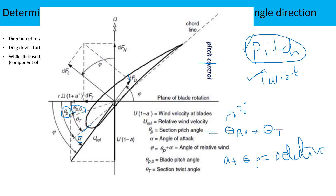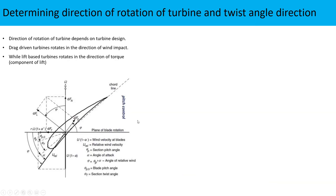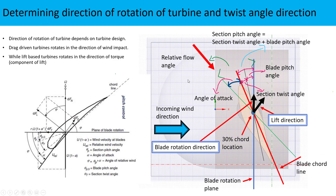When you add the angle of attack alpha to the section pitch angle theta_P, you get the relative flow angle — the flow angle of the relative wind experienced by the wind turbine. So the relative flow angle equals theta_P plus alpha.